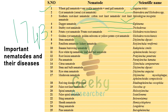Golden cyst nematode, golden eelworm, or yellow potato cyst nematode is also Globodera rostochiensis. Stem nematode is Ditylenchus dipsaci. Reniform nematode or kidney nematode is Rotylenchulus reniformis. Banana burrowing nematode is Radopholus similis. Rice white tip nematode or leaf and bud nematode is Aphelenchoides besseyi. Root lesion nematode is Pratylenchus penetrans. Pin nematode is Paratylenchus hamatus. Citrus nematode is Tylenchulus semipenetrans — these are important.